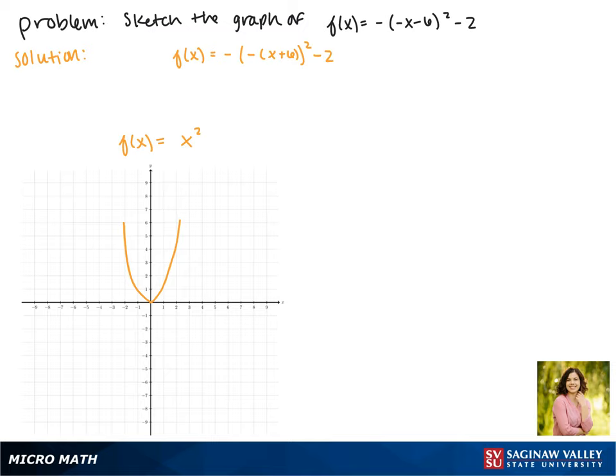Now we'll start looking at reflecting our parent function. When we square a negative x, that reflects it across the y-axis, but this is already symmetric across the y-axis so that doesn't change it.